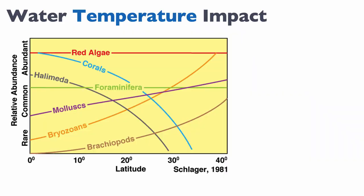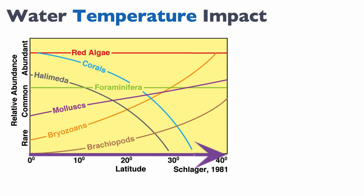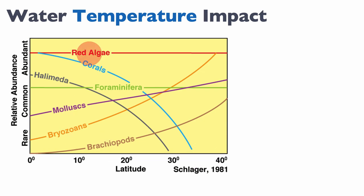The first step is to remember the diagram where we've seen there is a strong temperature control on some autotrophs like corals and Halimeda. When these autotrophs decrease, the relative proportion of molluscs, bryozoan, brachiopod, and red algae increases. So it seems that C factories are present not because conditions are great for C factory producers, but rather because conditions are detrimental to T factory producers that produce much more sediment.